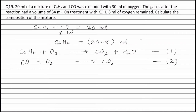The gases left after the reaction are oxygen and carbon dioxide, and the total volume of the gases is 34 ml. On treatment with KOH, all the carbon dioxide is absorbed and only 8 ml of oxygen remains. Therefore, the volume of carbon dioxide formed is 34 - 8, which is equal to 26 ml.